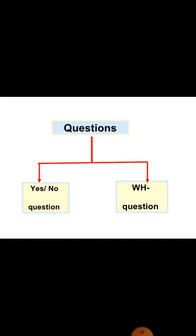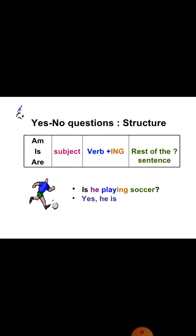Now let's look at questions. There are yes/no questions, which start from verb to be — ismr — and wh questions, which start from a wh word. For yes/no questions, the formula is: ismr plus subject plus ing form of verb plus object, question mark. For example: Is he playing soccer?